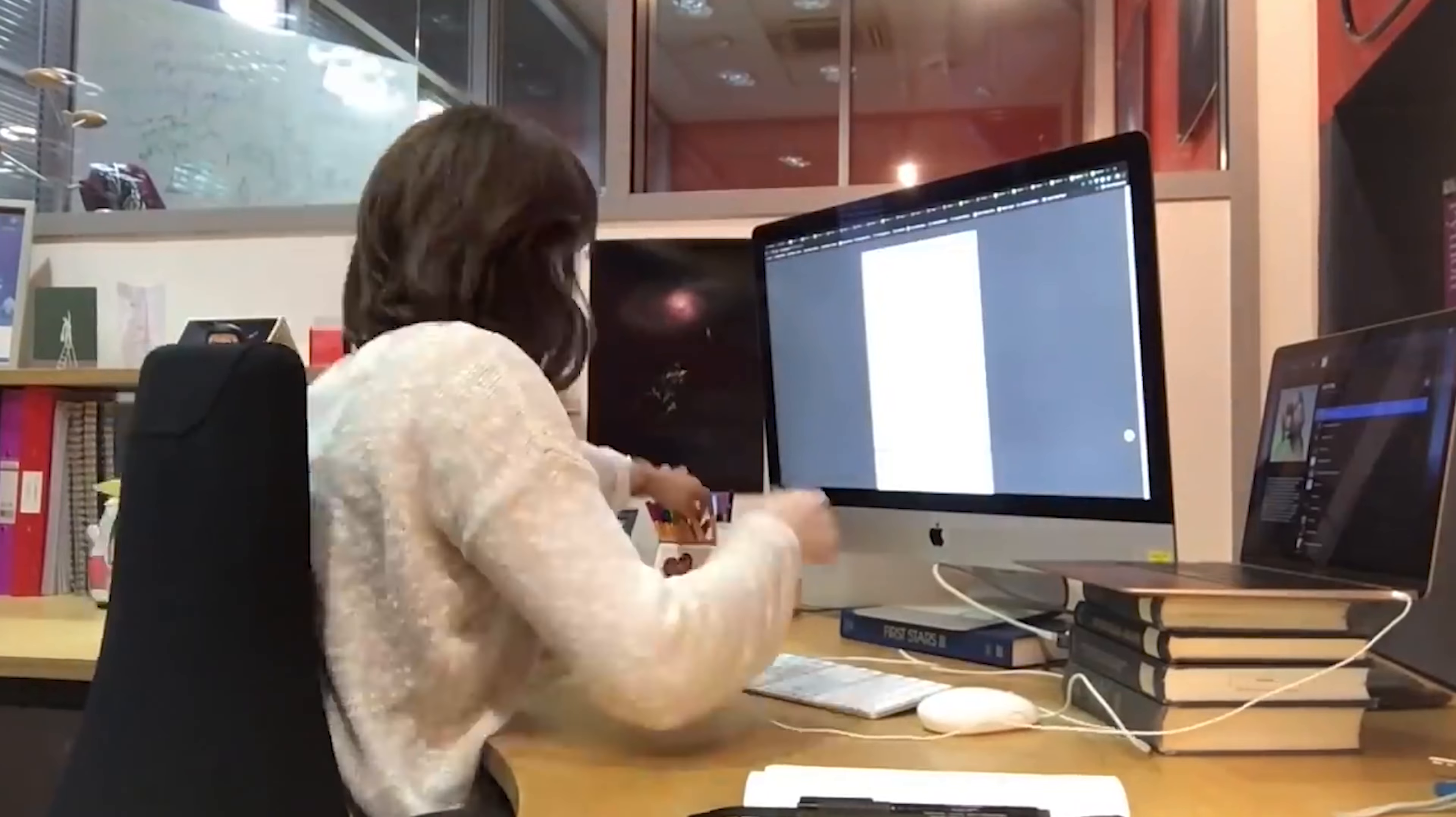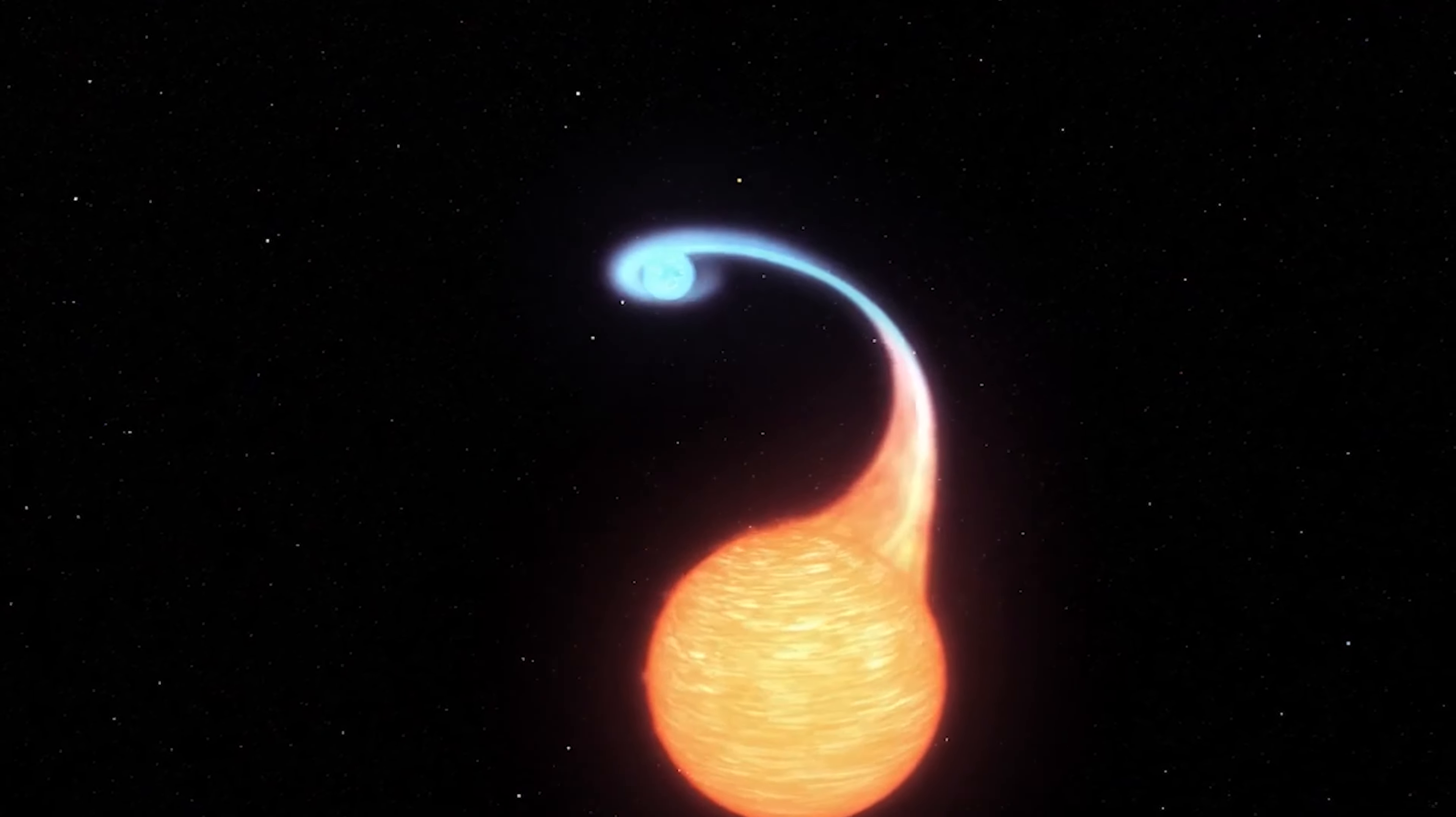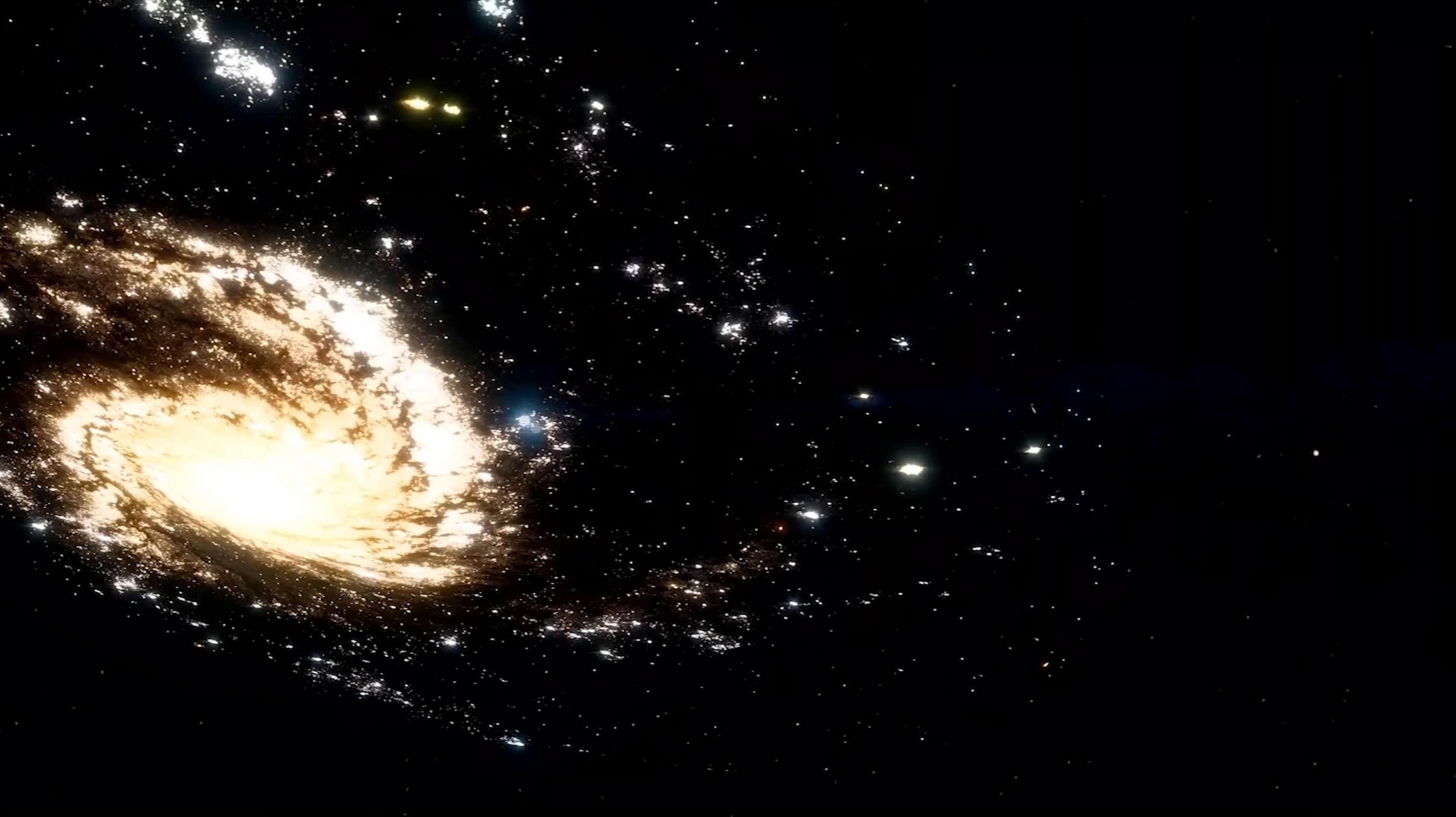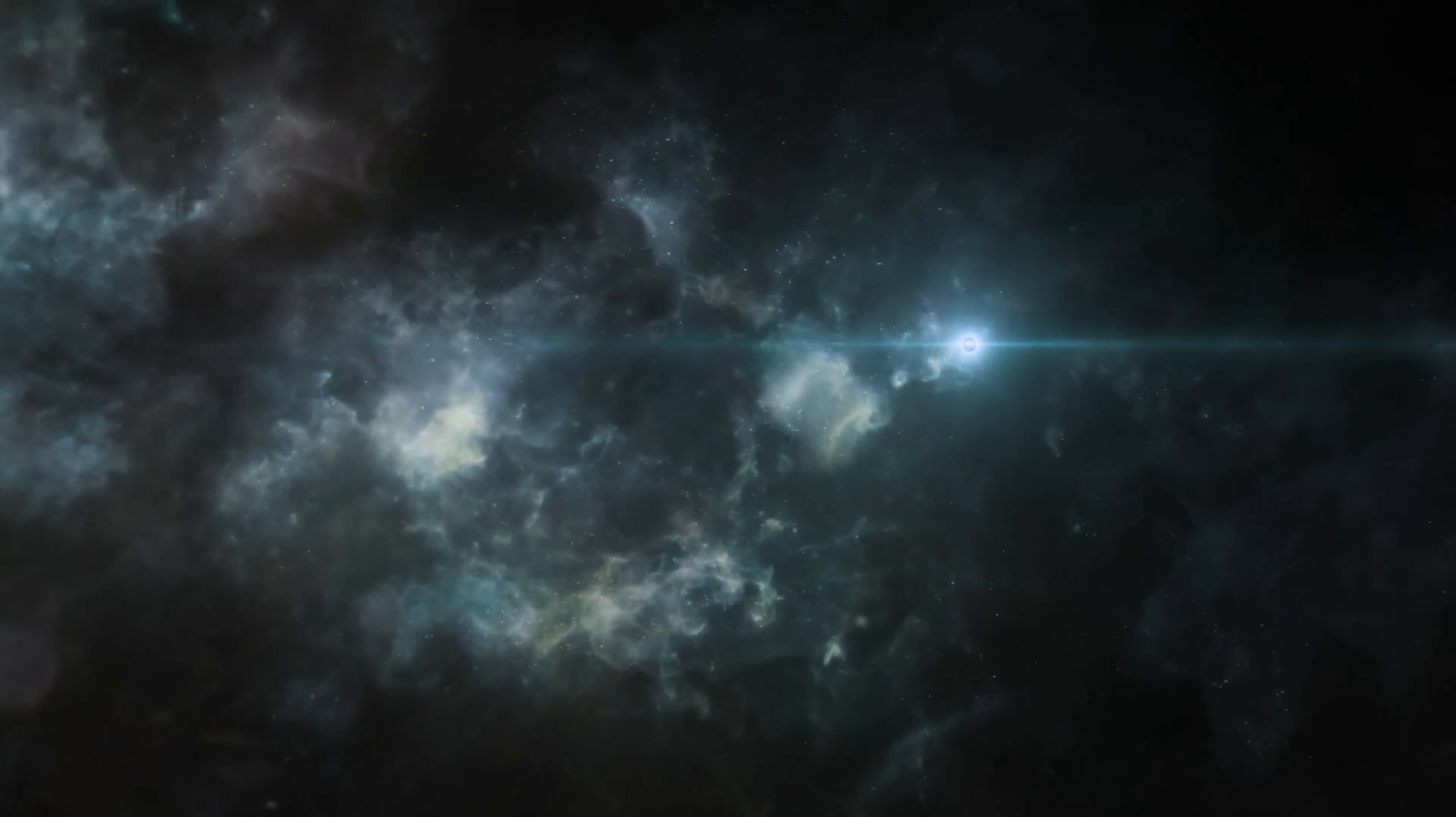However, as is sometimes the case, something was different. According to the first hypothesis, the problem was the close distance between LP-40365 and the exploding star. That explains why LP-40365 flew out of the galaxy at such a high speed. The kick was too strong.